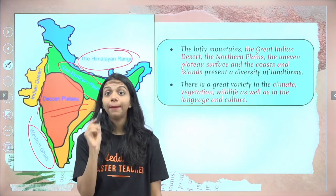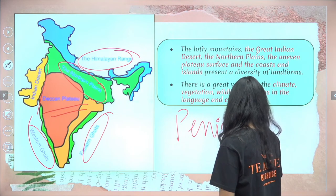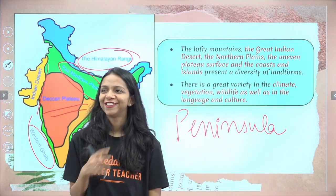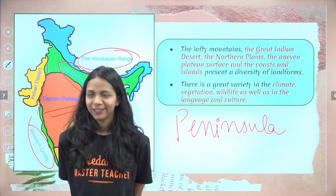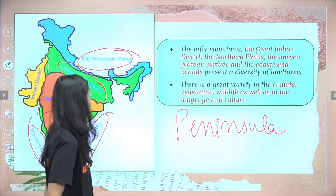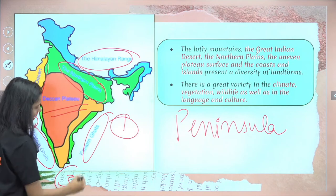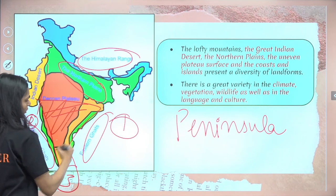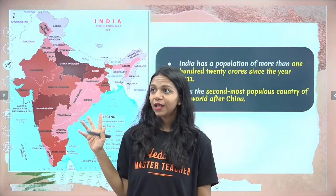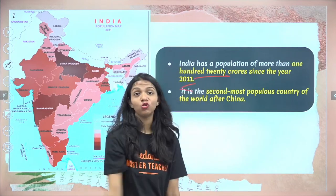India is called a peninsula. Can someone tell me what is the meaning of peninsula? The Indian peninsula is a land mass that is surrounded by water on three sides. This part of India — remember this term. India has a population of more than 120 crore since the year 2011.